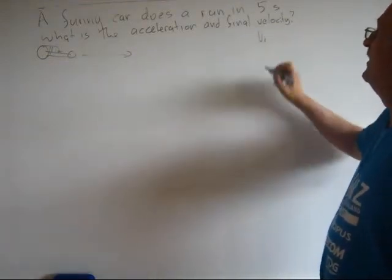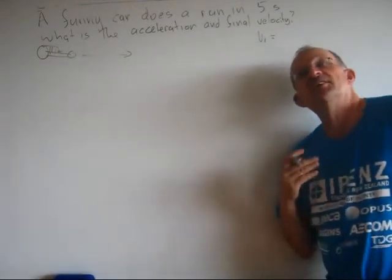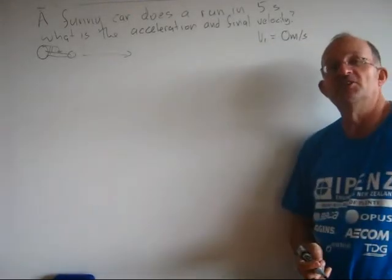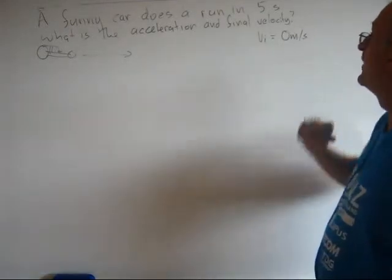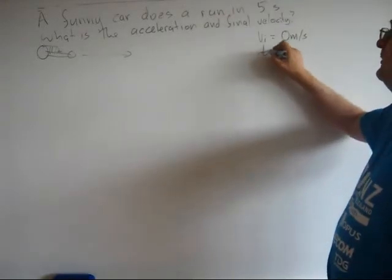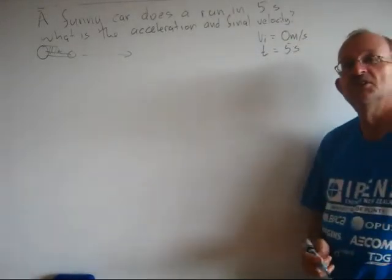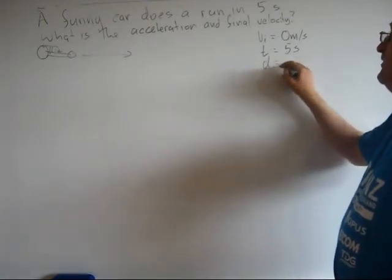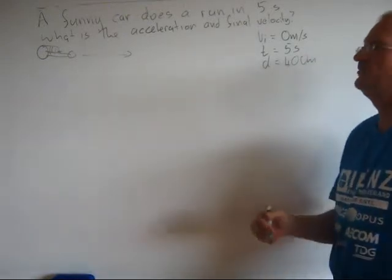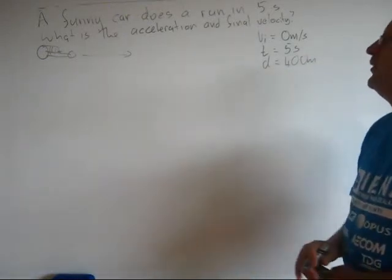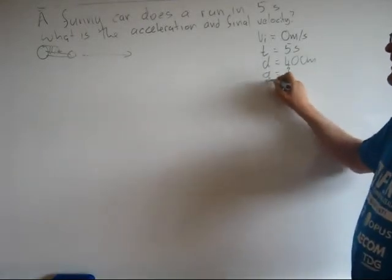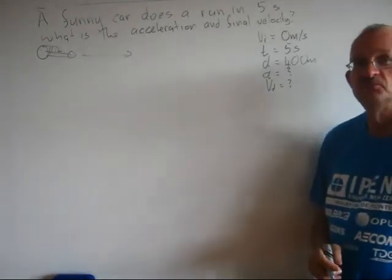Step 2: Write down what we know. There's a little bit of extra information in here which you haven't been given, but I'll go through all of this. What's the car's initial velocity? If it's a dragster, it starts, it does a standing start. So the initial velocity is 0 meters per second. What else do we know? We know the time. Time equals 5 seconds. What else do we know? We know the distance. Standing quarter mile is 400 meters. Actually, it's 402.25 meters. What do I want to find out? I want to find out the acceleration, and I want to find out the final velocity.